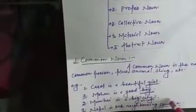The kinds of noun — this is the classification of noun according to old English grammar — are: common noun, proper noun, collective noun, material noun, and abstract noun. What is common noun? A common noun is the naming word of a common person, place, animal, thing, etc. — which is common to all. For example: 'Carol is a beautiful girl' — here 'girl' is a common noun. 'Mohan is a good boy' — 'boy' is a common noun. 'Mumbai is a big city' — 'city' is a common noun. 'Nepal is our neighboring country' — 'country' is a common noun.